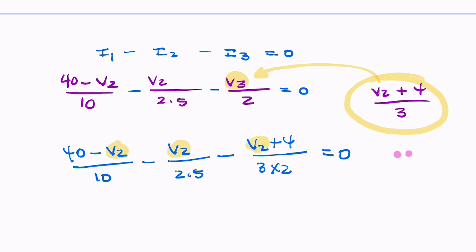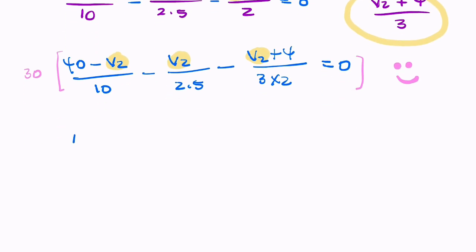And that is good news. So let's get rid of these denominators. Let's multiply by the lowest common multiple. What's the lowest common multiple of 10, 2.5, and 6? I'm guessing it's 30. So I'm going to multiply everything by 30. That will give me 120 minus 3V2 minus 12V2 minus 5V2. Then, the negative sign operates on that. So you get negative 5 times 4 is 20 equals 0.